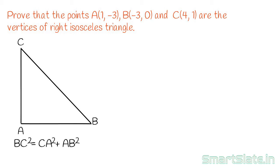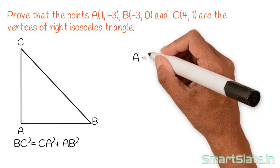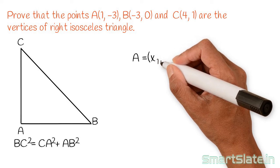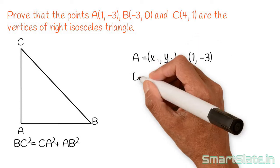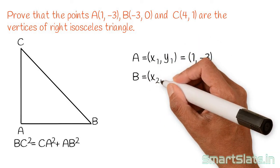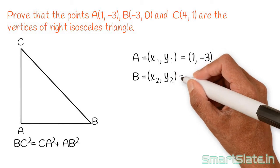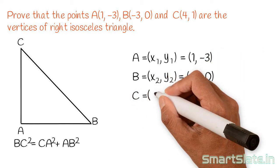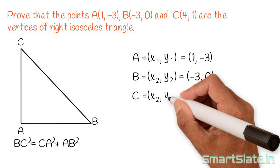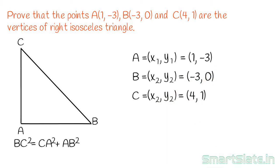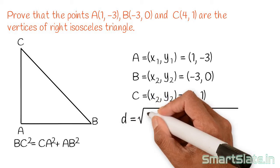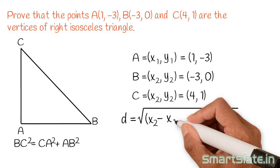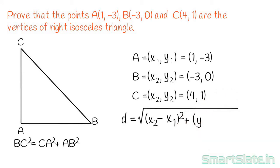Consider point A as (x1, y1) which equals (1, -3). Point B is (x2, y2) which equals (-3, 0). And point C has values (4, 1). We will calculate the distance using the formula: square root of (x2 minus x1) squared plus (y2 minus y1) squared.